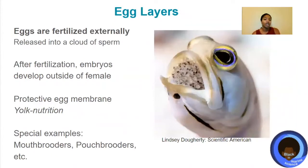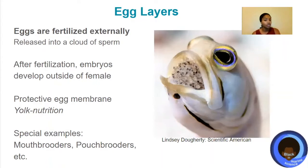Egg layers, by contrast, have their eggs fertilized externally — they'll actually release those eggs into sperm, and then after fertilization occurs, those embryos will develop outside of mom, though not necessarily away from mom. These embryos will have a protective egg membrane because they're developing outside of mom and need extra protection braving the elements. They'll also get nutrition from yolks. Some examples of egg layers are mouth brooders or pouch brooders.